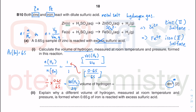Move the 24 to the other side — it goes up and multiplies. So divided by 24 becomes times 24 on the other side. This gives 0.24 dm³. The answer must have both value and unit. The unit is dm³ because the molar volume is 24 dm³ per mole. So the answer is 0.24 dm³ of hydrogen gas.